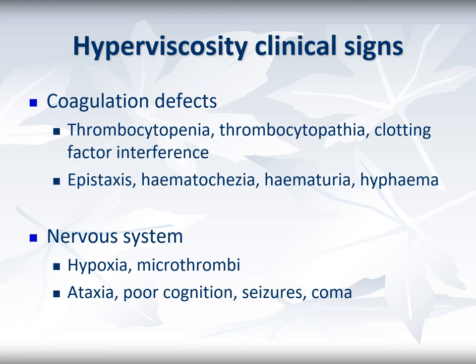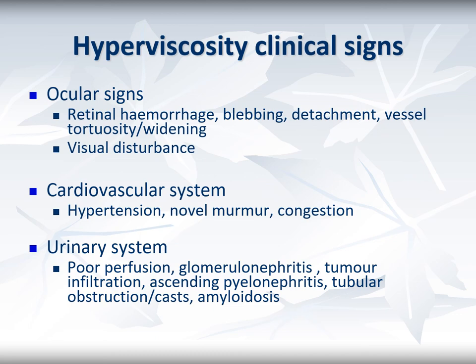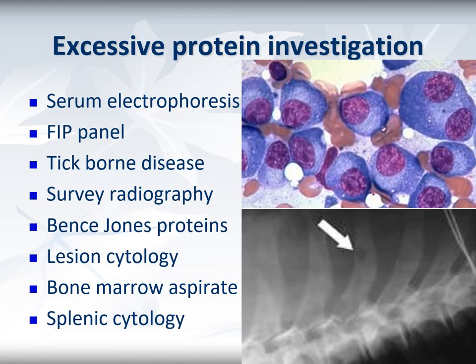There is often separate interference with the coagulation cascade resulting in bleeding problems, some of which may be occult initially. Poor circulation in the smallest capillaries can affect the central nervous system, resulting in poor cognition, ataxia, and perhaps more serious neurological signs. The owner may report visual disturbances; when subclinical, severe vascular problems may be visible on fundoscopic examination. There may be a new murmur and hypertension increasing the load on the cardiovascular system. The renal system can suffer from poor perfusion, and gammopathy can cause amyloidosis or form casts in the urinary tubules. Overall, the hyperviscous patient presents with a wide range of clinical signs and a high index of clinical suspicion is needed to reach the diagnosis.